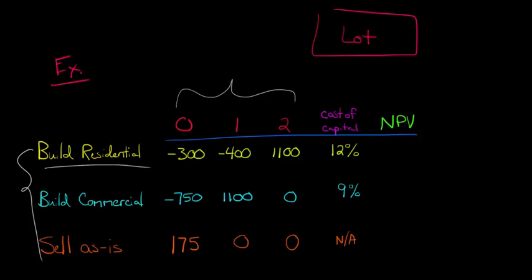If we're going to calculate the net present value for each of these, for the residential, we just have, what would that be? Negative 300 minus 400 over 1.12 plus, and I don't know if you can see this, maybe I'll put it up here, plus 1100 over 1.12 squared. And the reason for that is, you could just take a look at my net present value video if this is hard for you to understand.